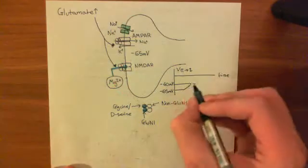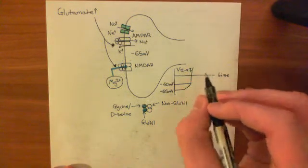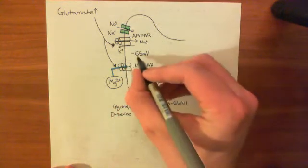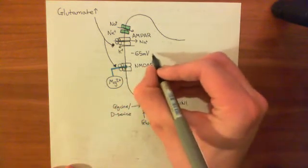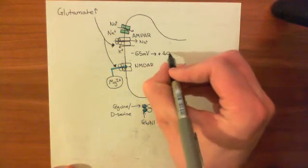And that's going to cause a large depolarization of the cell. So the electrical potential difference across this cell membrane is going to hugely depolarize. It's going to depolarize up to potentially plus 40 millivolts.